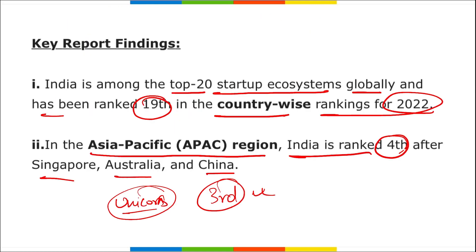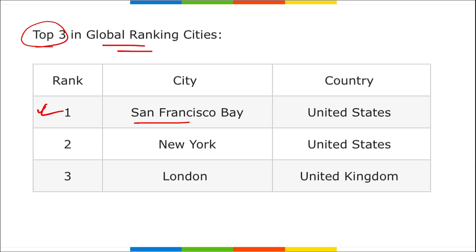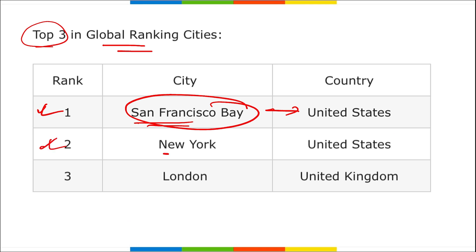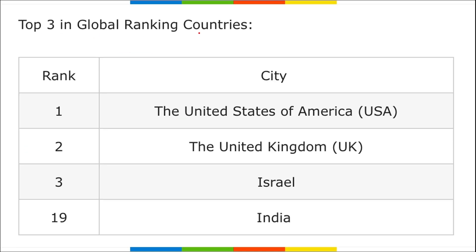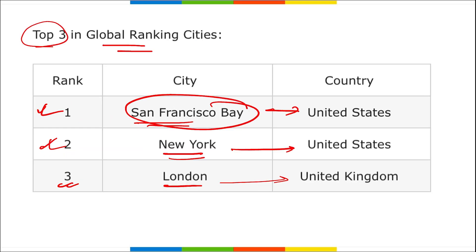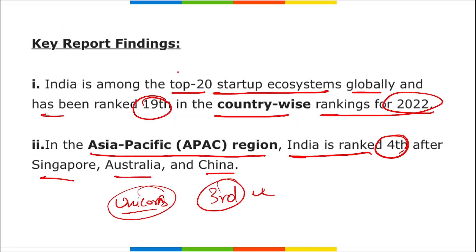Globally, San Francisco Bay Area of USA secured the top position in the Global Startup Ecosystem Index, followed by New York (USA) in second and London (UK) in third. In country-wise rankings: USA is first, United Kingdom is second, Israel is third, and India is 19th.